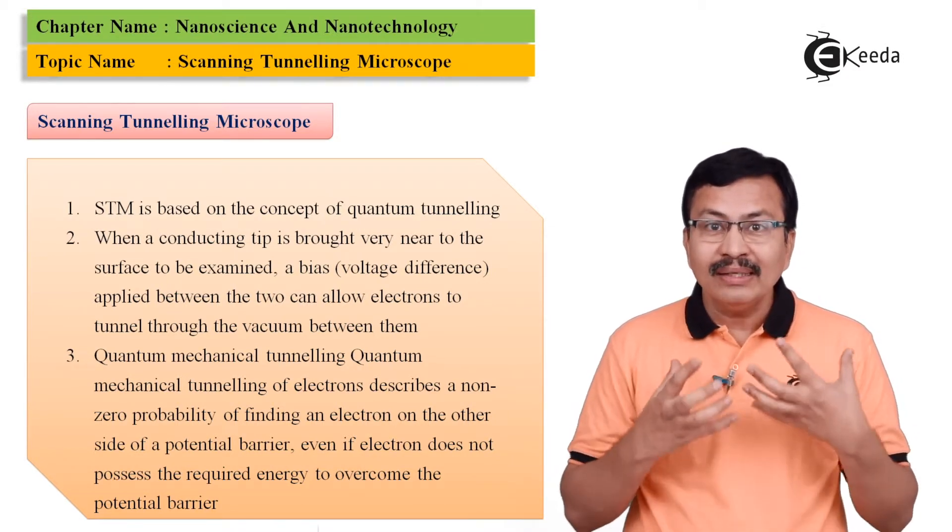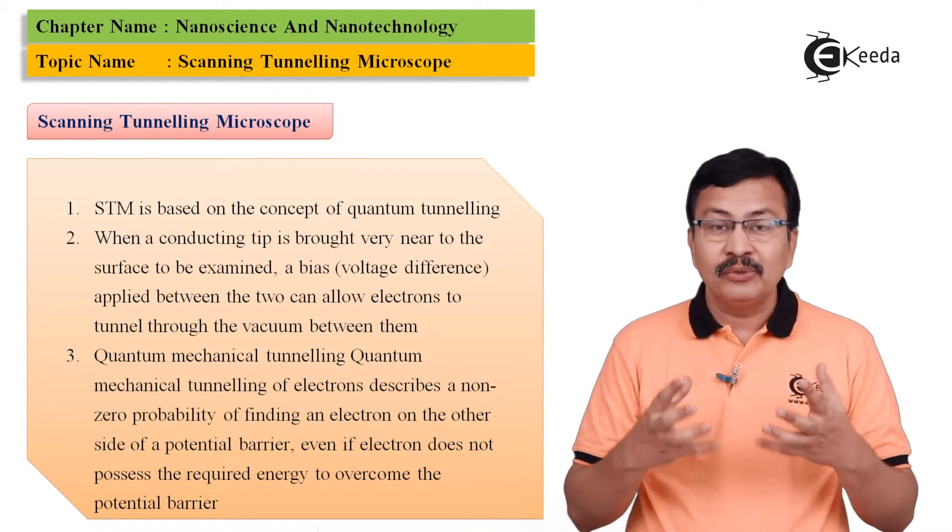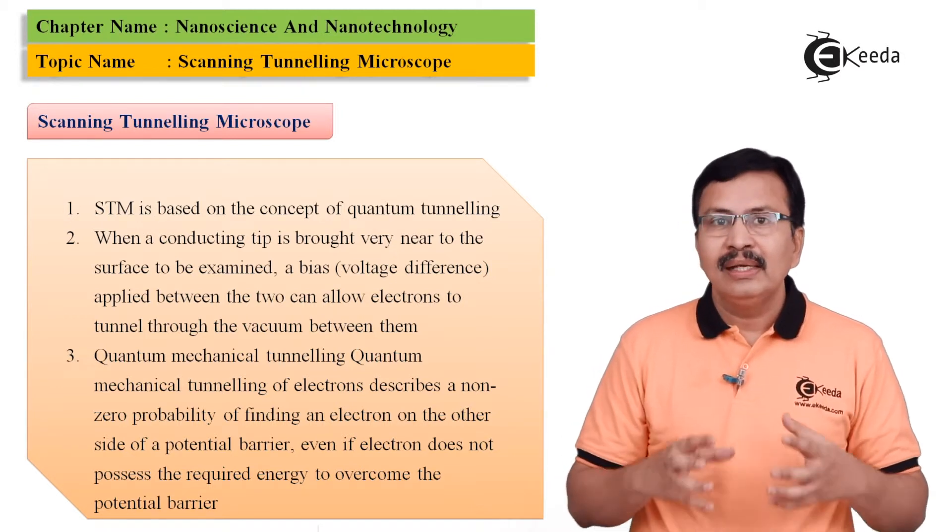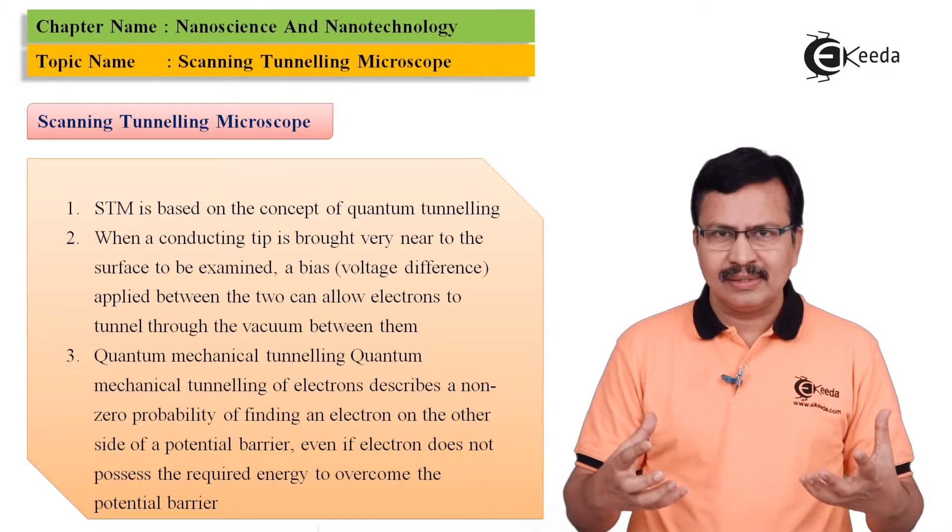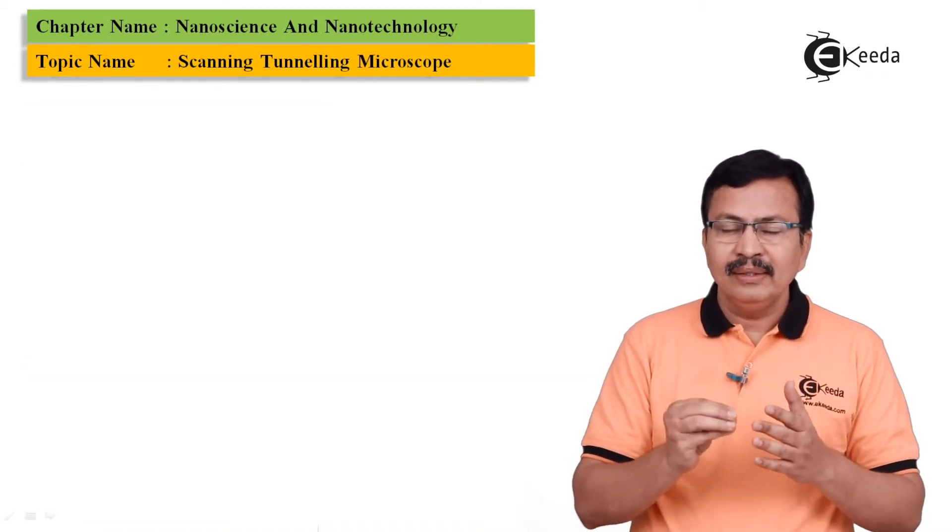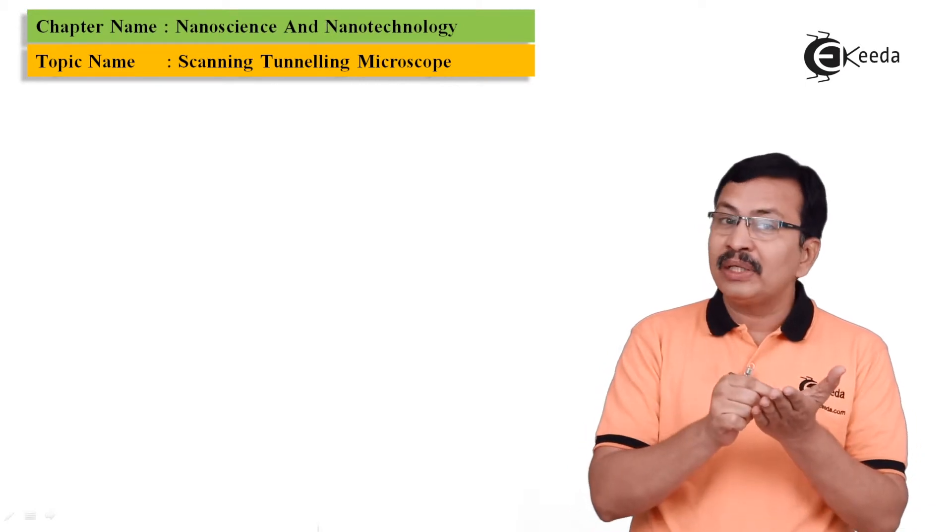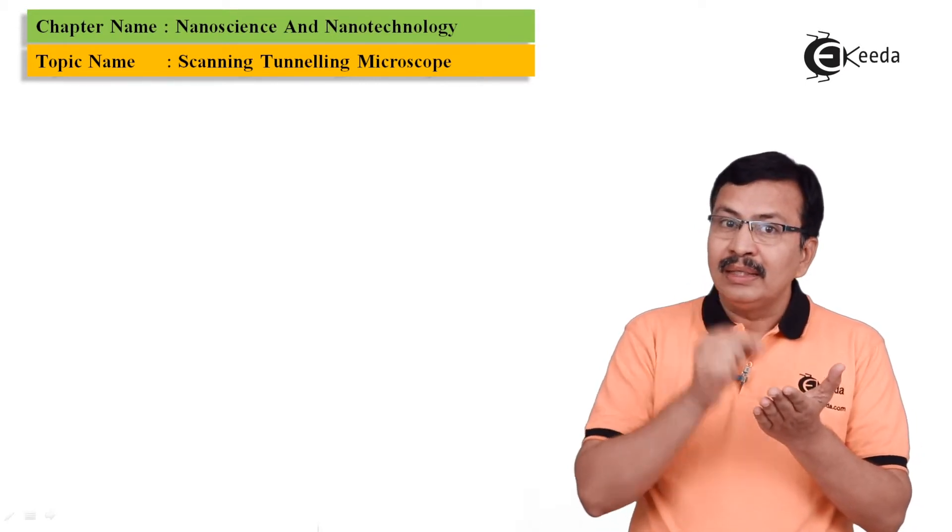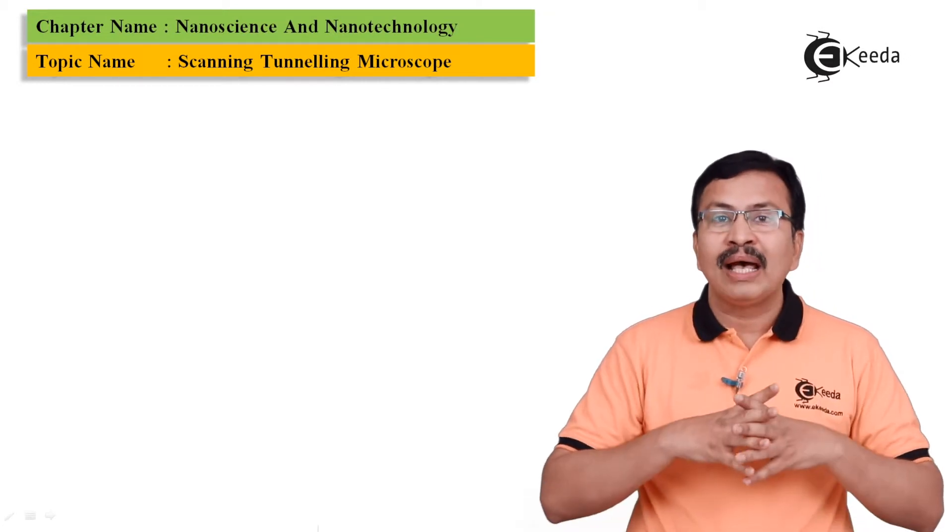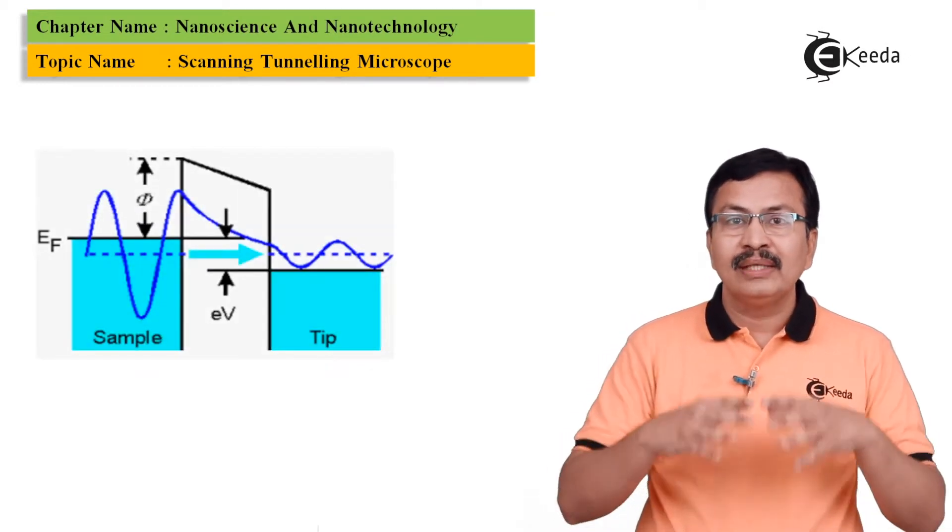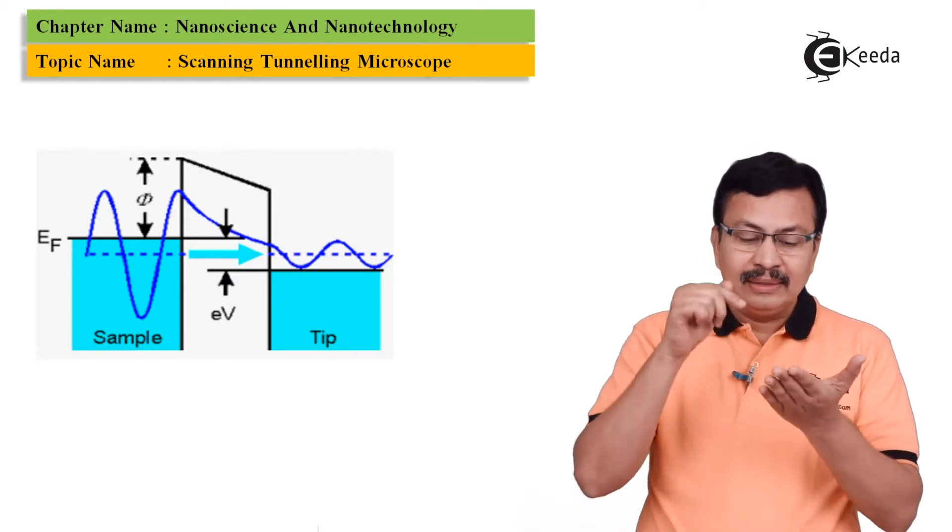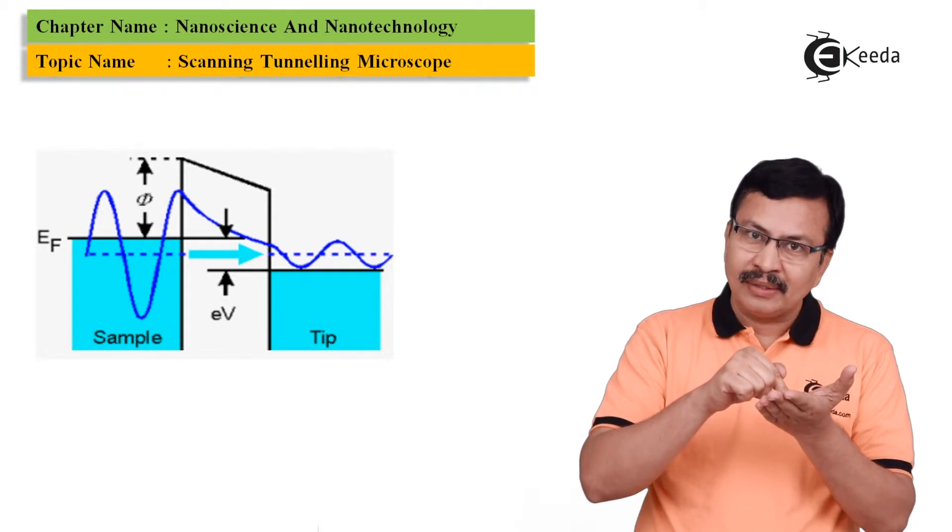But then why is it that we are able to see a tunneling current and the reason for this is quantum mechanics wherein it says that if the potential barrier length is very small then even if the electrons do not have any energy or rather have less energy than the potential barrier then they can actually tunnel through that particular potential barrier.